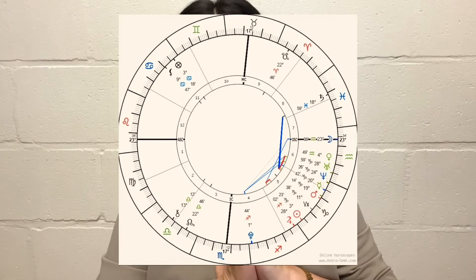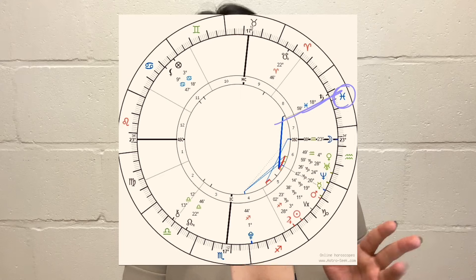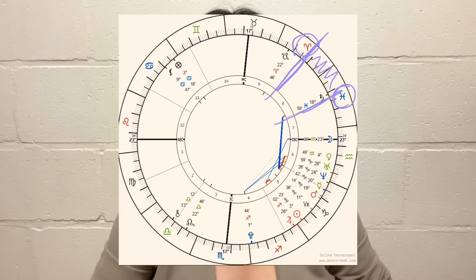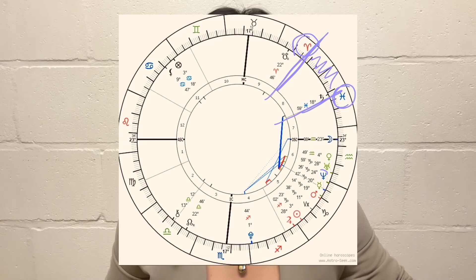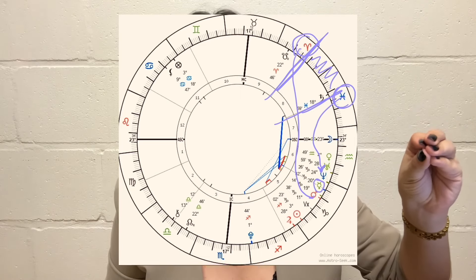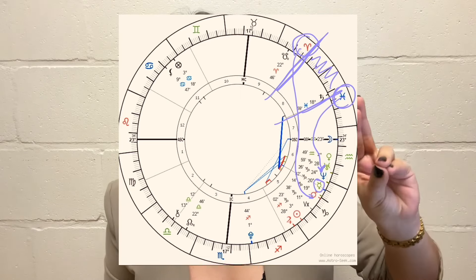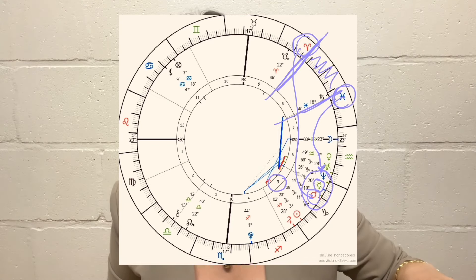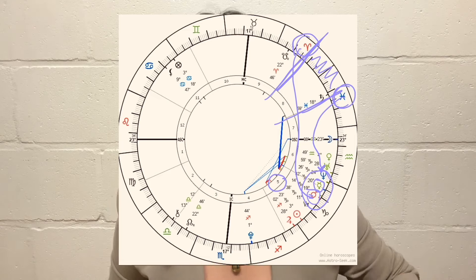In my chart, my eighth house starts with Pisces and has Aries. Pisces is ruled by Neptune, and Neptune sits very close to my second house ruler Mercury. The co-ruler of my eighth house is Aries, ruled by Mars, and my Mars is conjunct Mercury — my second house ruler. So my eighth house rulers connect directly to my second house ruler.